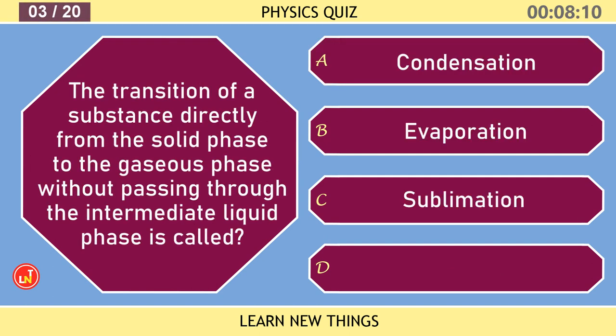The transition of a substance directly from the solid phase to the gaseous phase without passing through the intermediate liquid phase is called? Sublimation.